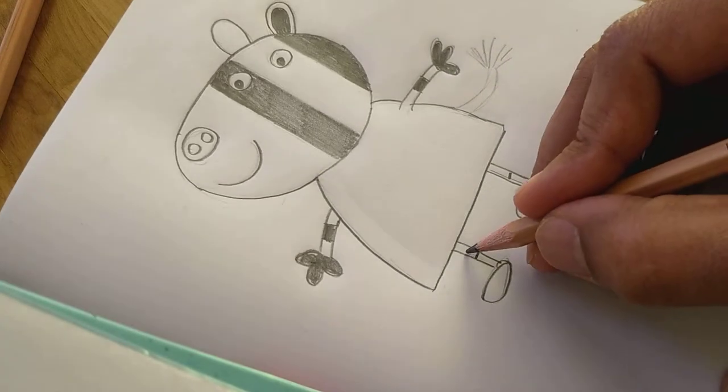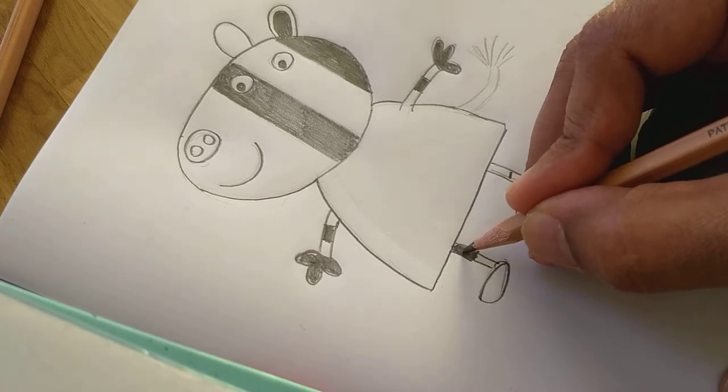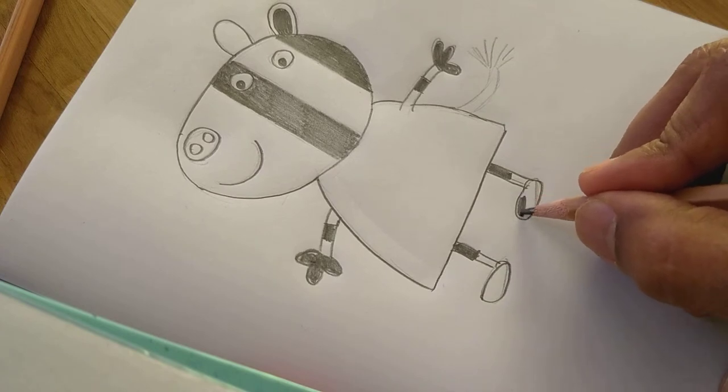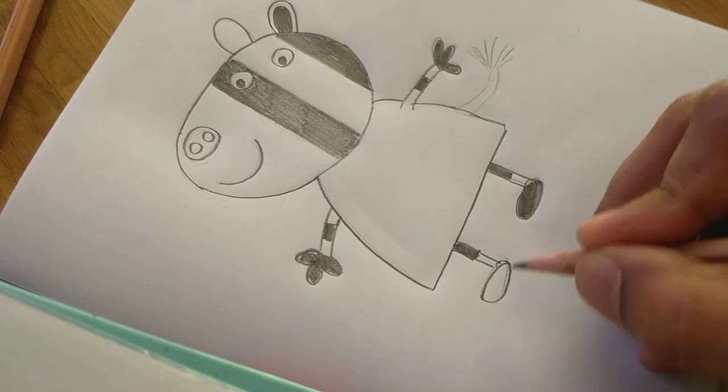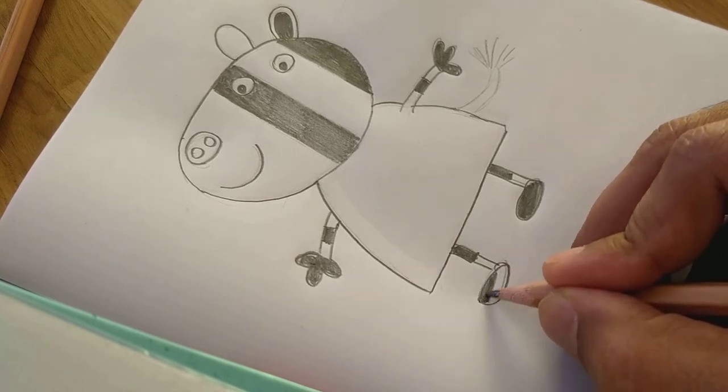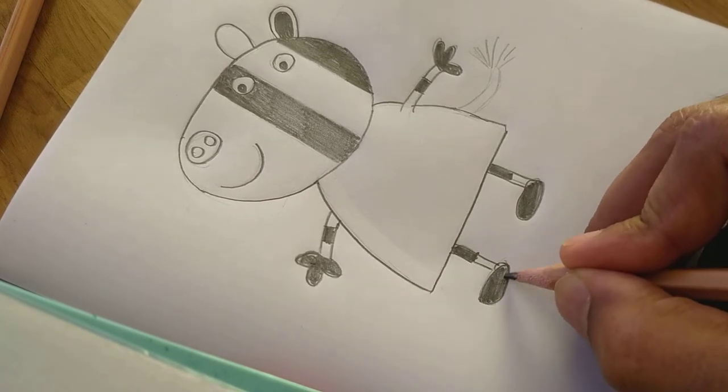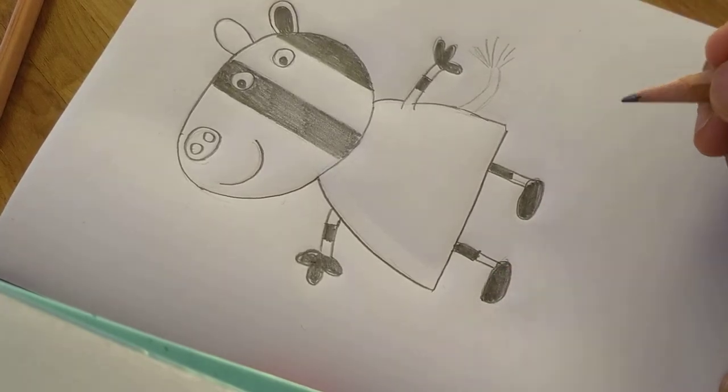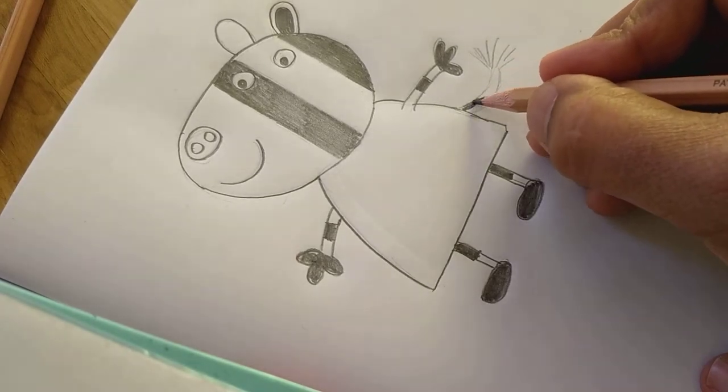The leg portion, this portion has to be dark, and this one it has to be dark, and the shoes has to be dark. The other shoes also has to be dark. Make sure that you don't leave any empty spaces within the closed figure. It should be a complete fill. And the tail, it has to be completely dark.